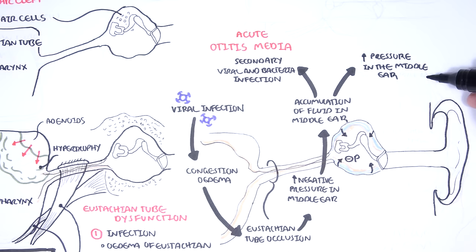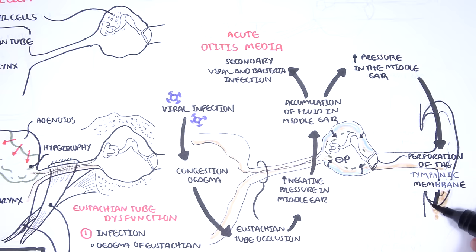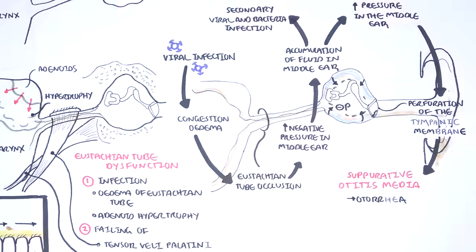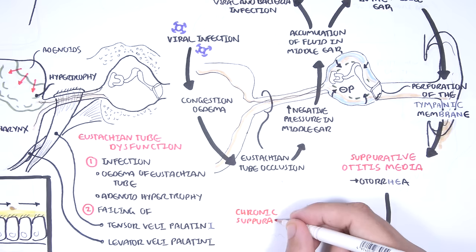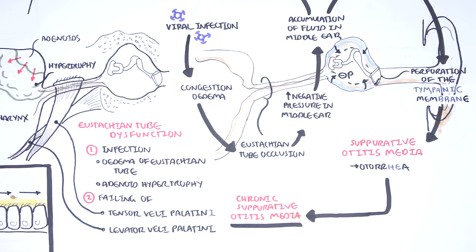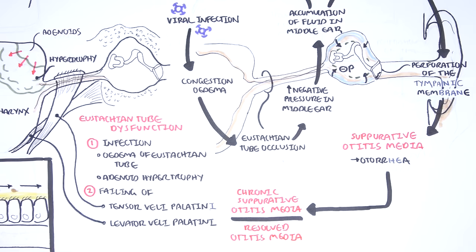If the pressure becomes too great in the middle ear because of fluid building up, the tympanic membrane can perforate. This is called suppurative otitis media. Suppurative otitis media is characterized by ear discharge, termed otorrhea. Suppurative otitis media can become chronic, and thus is termed chronic suppurative otitis media. Sometimes it resolves, and the perforated membrane heals and returns to a new baseline.